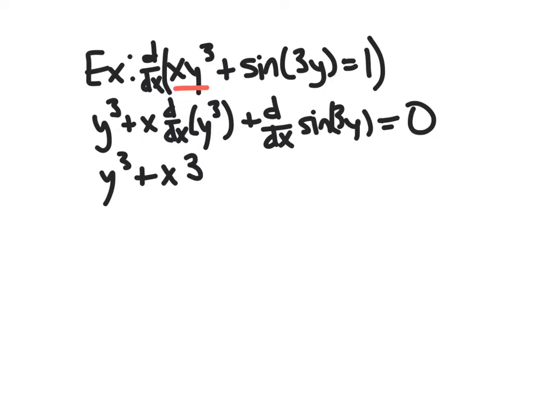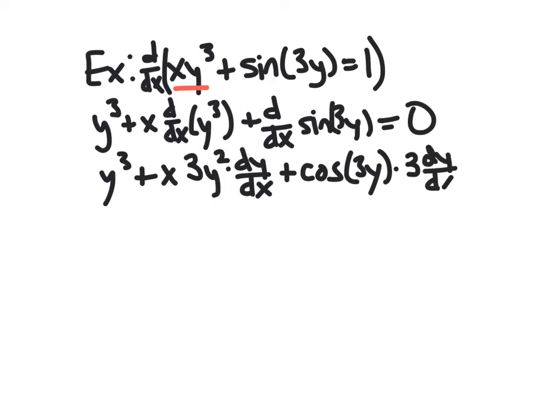So y cubed. We're treating y as a function of x. So this is chain rule. So we get 3y squared and then multiply by the derivative of the inside, which is y. So that derivative is dy/dx. Plus, this guy is double chain rule. So first, sine is outside. So derivative of sine is cosine. Plug in our inside, 3y. Times derivative of the inside. 3y requires the chain rule itself. So we get 3 and then times derivative of y, which is dy/dx. dy/dx equals 0.